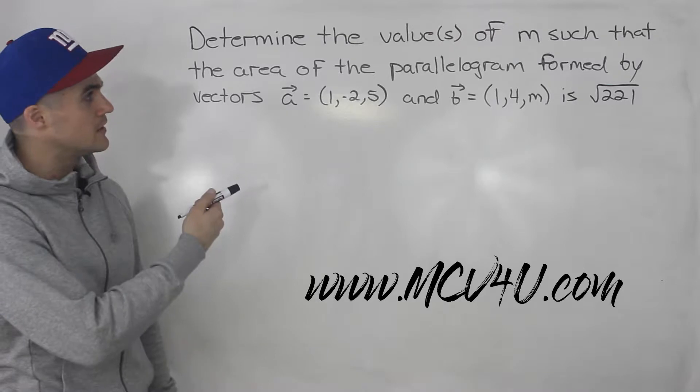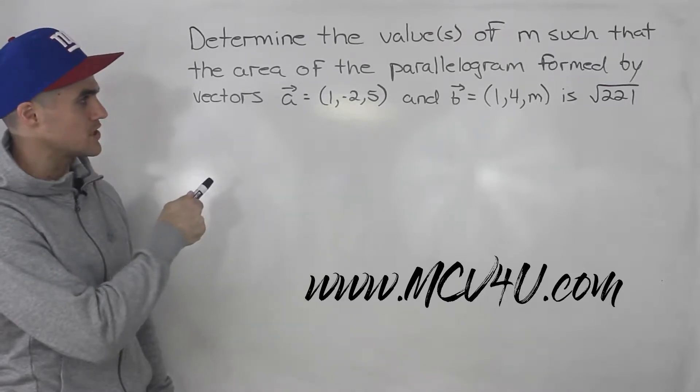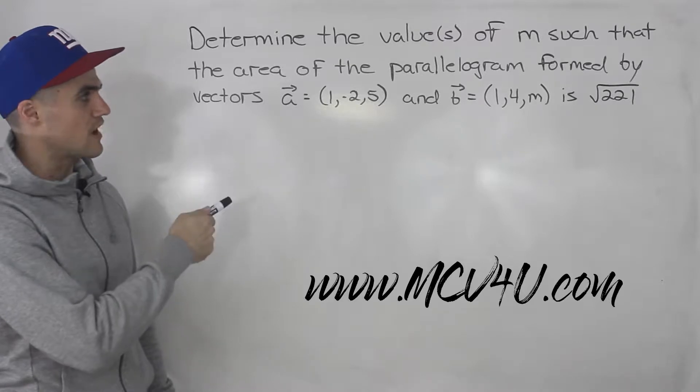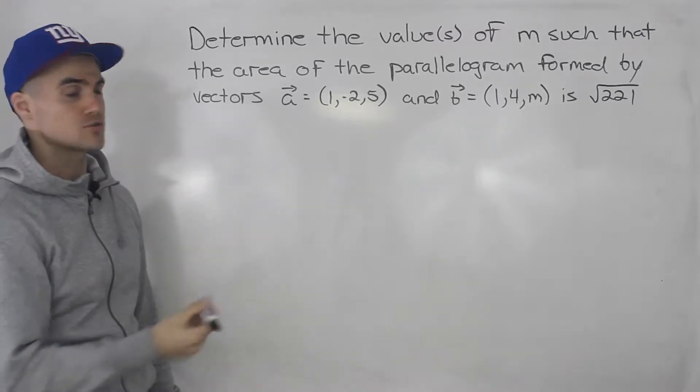We have to determine the values of m such that the area of the parallelogram formed by vectors a, which has components 1, negative 2, and 5, and vector b, 1, 4, and m, is root 221.